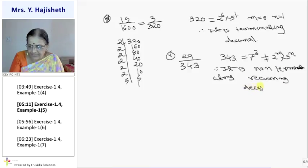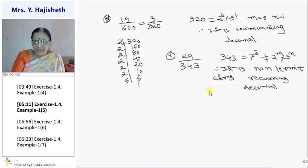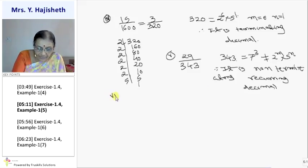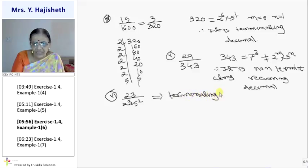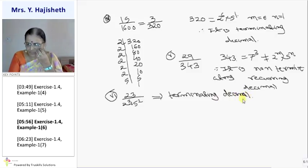Decimal. The 6th sum is 23 upon 2 raise to 3 into 5 raise to 2. This implies terminating, because the denominator can be expressed in the form 2 raise to m into 5 raise to n.